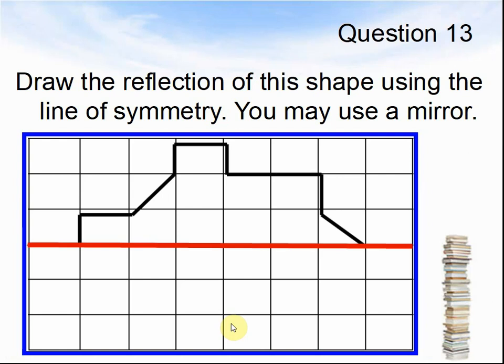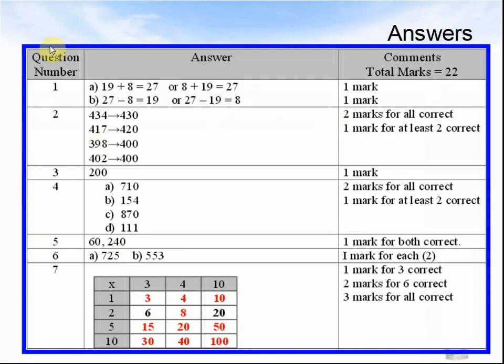Here come the answers. Question 1. The answers were 19 plus 8 equals 27, or 8 plus 19 equals 27. 1b, 27 minus 8 equals 19.